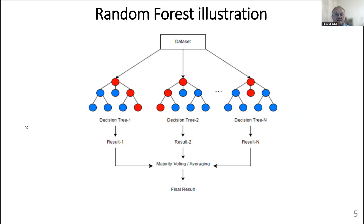Random Forest is an ensemble machine learning method that uses multiple decision trees to achieve higher prediction accuracy than is possible with a single decision tree. The basic idea is to build a large number of decision trees, each of which contributes to the final solution, providing a high level of accuracy and control over overfitting.